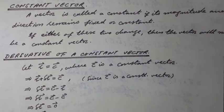delta C vector is equal to 0. Note it. It can be written as delta R vector is equal to C vector minus R vector.